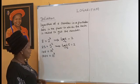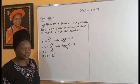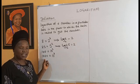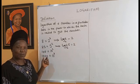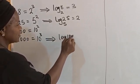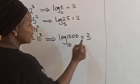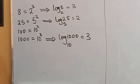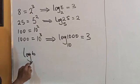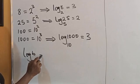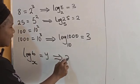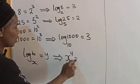100 is equal to 10 raised to power 2, which means log of 100 in base 10 is equal to 2. 1000 is 10 raised to power 3, which implies that log of 1000 in base 10 is equal to 3. Generally, if you have log of a number B in a particular base A equal to Y, it implies that A raised to power Y is equal to B.